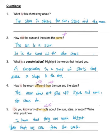Four. How is the moon different than the sun and the stars? We talked about it, right? The moon does not give off light and heat. But the stars do.